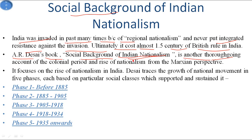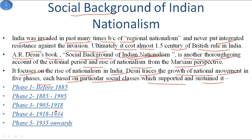AR Desai's book is a thorough account of the colonial period and the rise of nationalism from the Marxian perspective. It focuses on the rise of nationalism in India. Desai traces the growth of the national movement in five phases, each phase based on a particular social class which supported and sustained it. Phase one is before 1885, phase two from 1885 to 1905, phase three from 1905 to 1918, phase four from 1918 to 1934, and phase five is 1935 onwards.